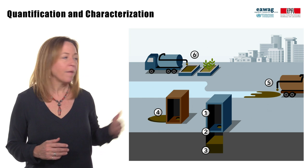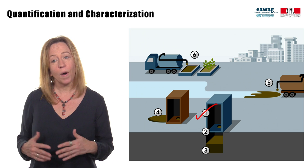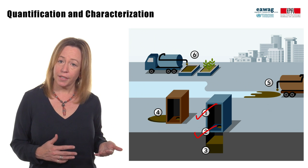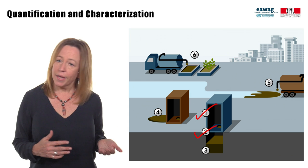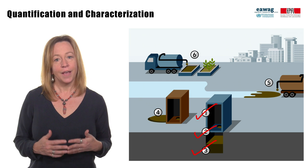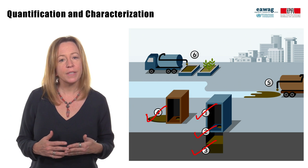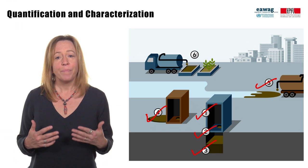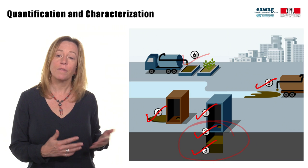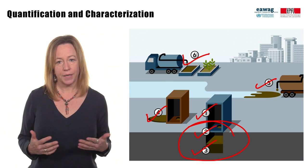You also learned about the importance of designing management options for the actual quantity and characteristics of fecal sludge based on the local context. Without reasonable estimations, you cannot accurately design a management plan. You also learned about the different places in the service chain where characteristics and quantities can be assessed to evaluate current and future demands for management needs to help ensure long-term sustainable management.